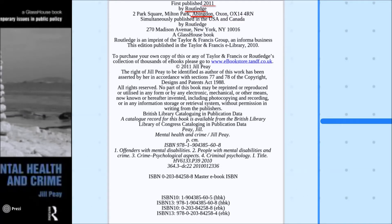The place of publication is slightly more difficult in this case as there are two places listed: Abingdon and New York. In such cases, in the Coventry University style we use the place which is listed first — in this case, Abingdon. Remember that we want to use the name of the city or town and not the state or the country.